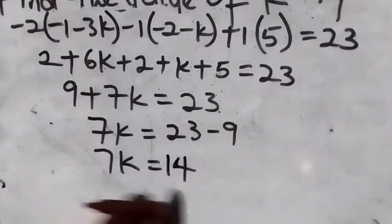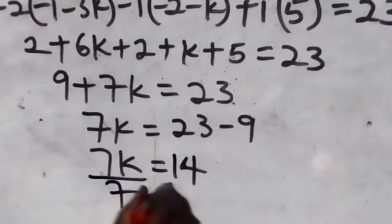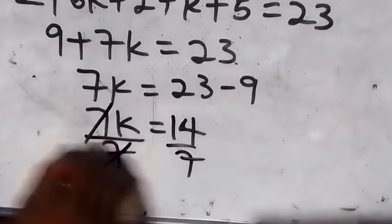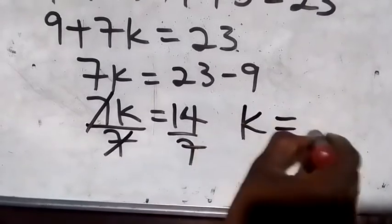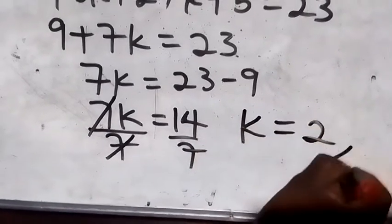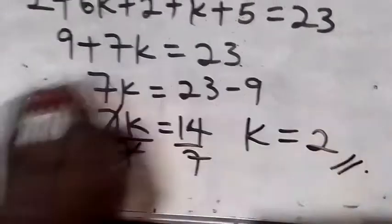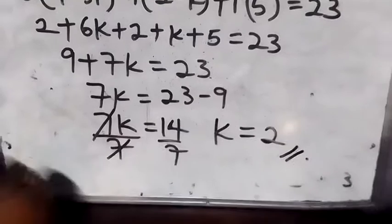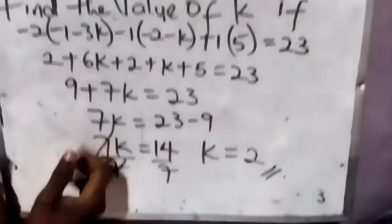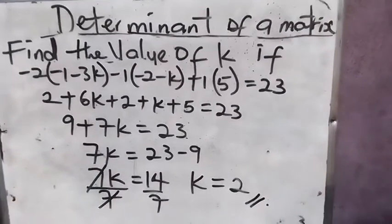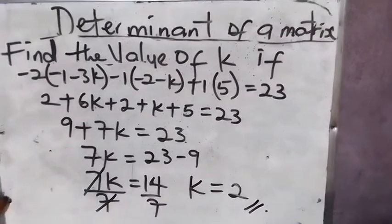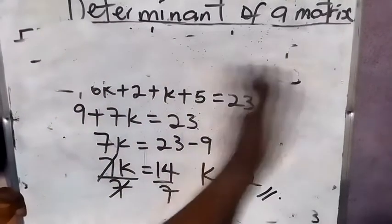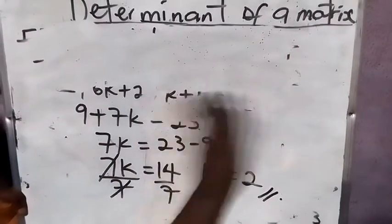Divide both sides by seven. Our k equals two. So k equals two. That's how you find the determinant of a three by three matrix.